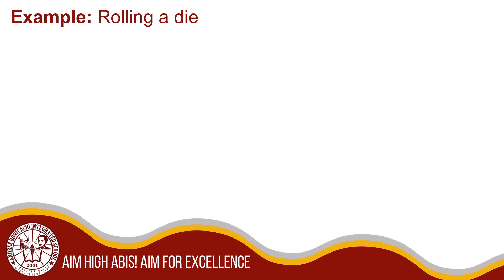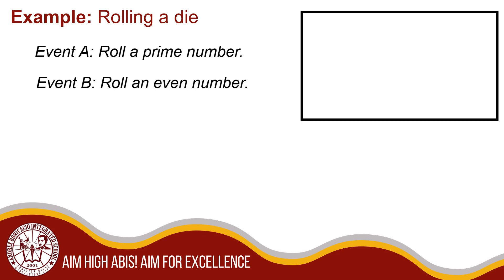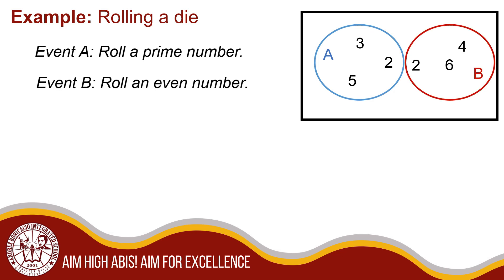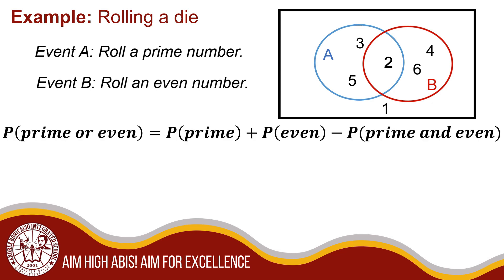It is often useful to use an event diagram to visualize the probabilities of events. Event A is the probability of getting a prime number and event B is the probability of getting an even number. There are six possible outcomes of rolling a die. Five of those outcomes are either prime or even. In the event, I remove one of the two which is the common element, so as to not double the count. Therefore, the probability of rolling either a prime or even number on a single roll of a die is 5 out of 6.